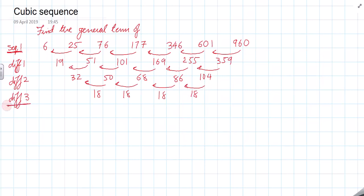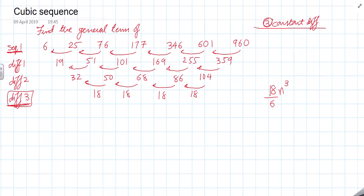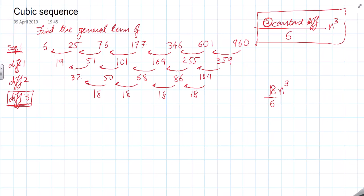So I find my third difference is constant. If my third difference is constant, this sequence will have an n³ term, and I take the constant difference and divide it by 6. So the third constant difference divided by 6 gives the coefficient of n³. This gives me 3n³.